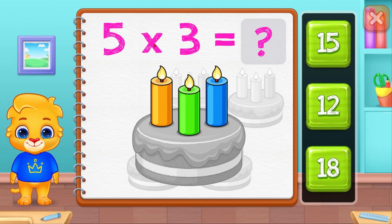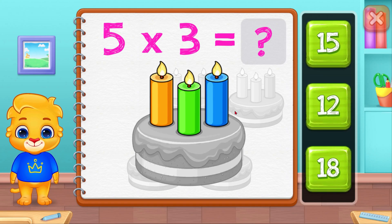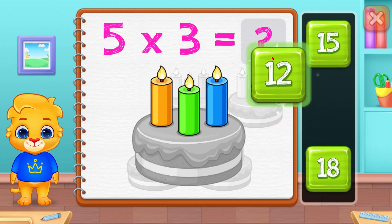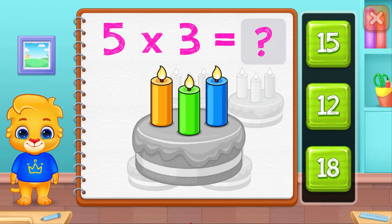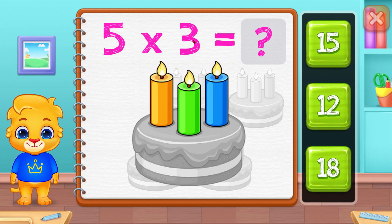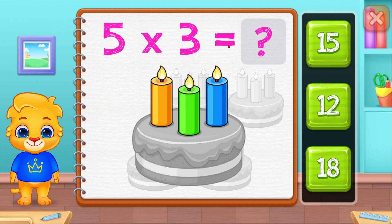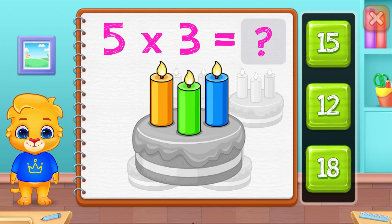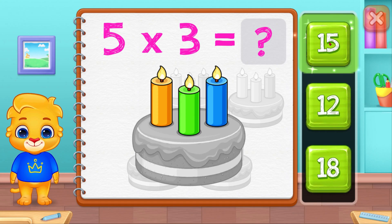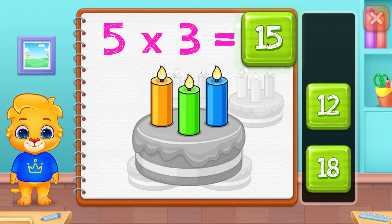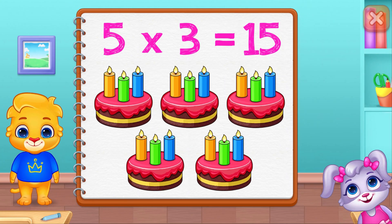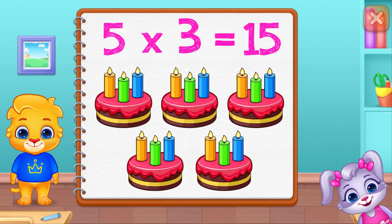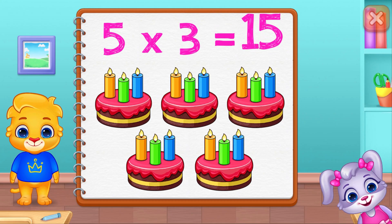5 times 3 equals 12. 5 times 3 equals 18. 15, 15. 5 times 3 equals 15.